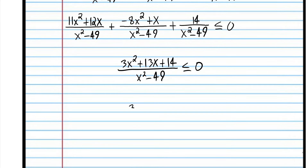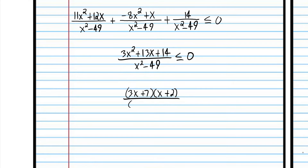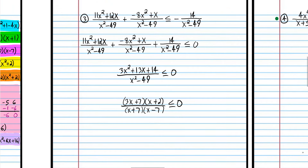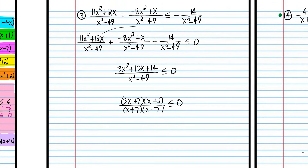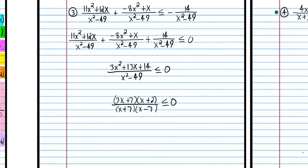Now we're going to factor. We have a quadratic in the numerator and the difference of two squares in the denominator. Step one: put everything on one side. Step two: combine everything to one fraction. Step three: find the x values that make the expression zero or undefined.